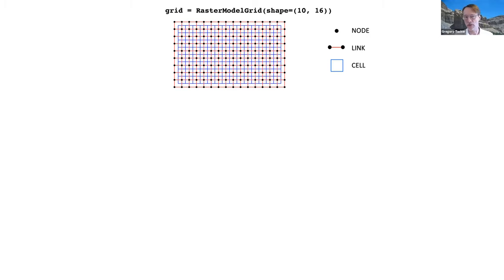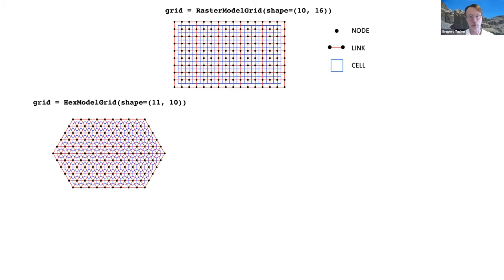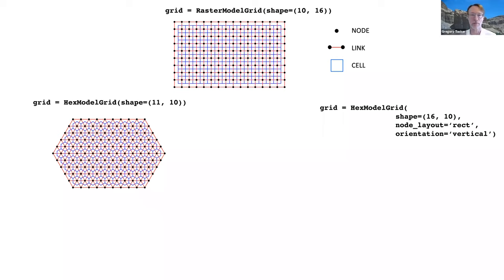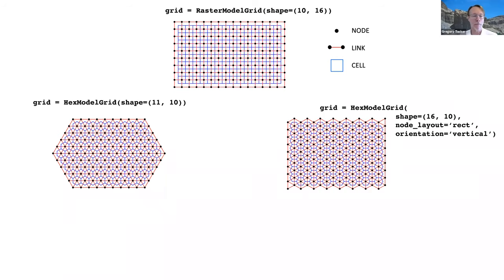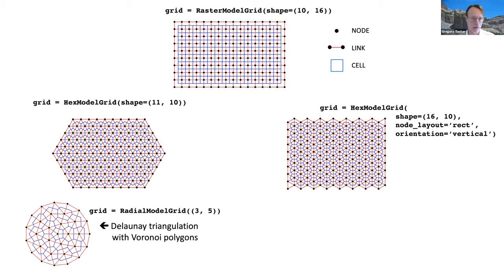Here's the command to create a hex model grid, and here's what that grid looks like. Grid creation functions give you some control over size and layout — for example, an alternative hex model grid with a rectilinear layout. Finally, an example of a radial model grid — useful for a volcano simulation — with a radial arrangement of nodes using a Delaunay triangulation under the hood.